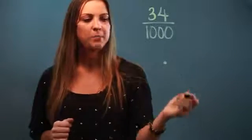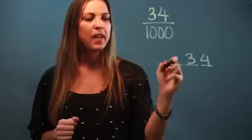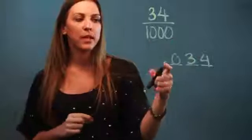It goes tenths, hundredths, thousandths, so that means my 34 needs to be right here. I'm filling that blank space in with a zero, so 34 over 1,000 is equal to 0.034 as a decimal.